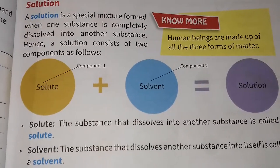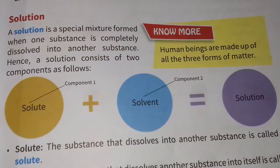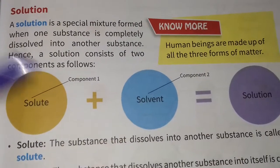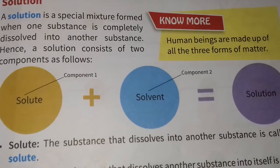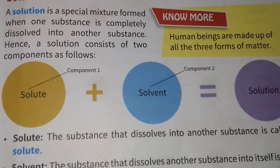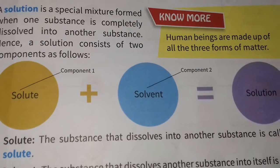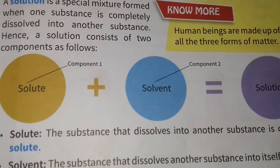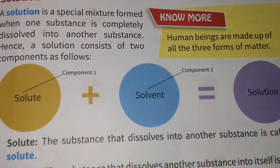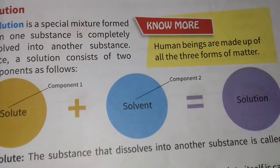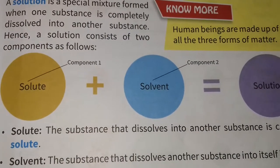Solute and solvent together make a solution. In sugar water, sugar is the solute and water is the solvent. Two liquids that mix with each other entirely are called miscible liquids — for example, water and lime juice. Two liquids that do not mix with each other are called immiscible liquids — for example, oil and water.